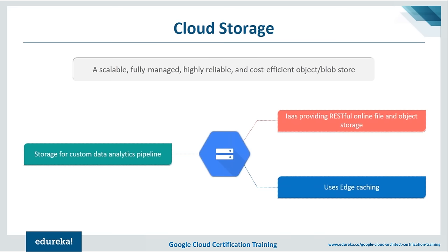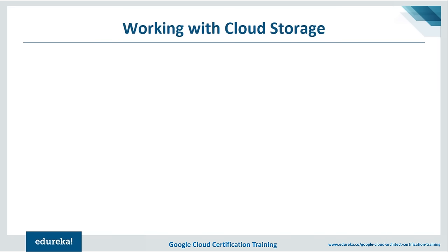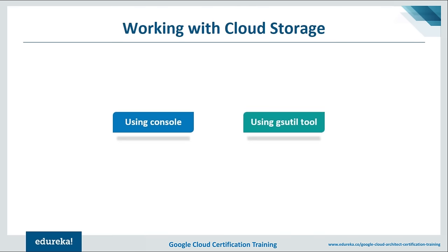Spotify is one of the users of Google Cloud Storage. Spotify uses Google Cloud Storage for storing and serving music — using regional storage allowed them to run audio transcoding in Google's Compute Engine close to their storage. When working with Cloud Storage, there are two different methods: the Console, provided by Google on the web UI, and the gsutil tool, which is a set of commands used in the Cloud SDK.